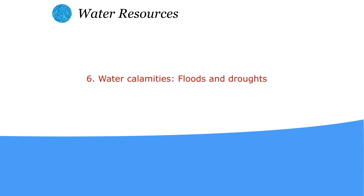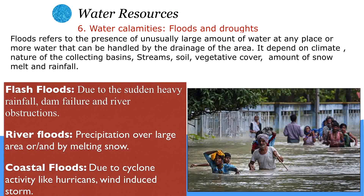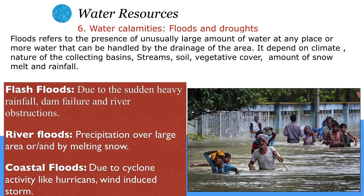Water calamities include floods and droughts. A flood is the accumulation of a large amount of water at one place that cannot be handled by the drainage system of that particular area. It depends on the climate, nature of the collecting basin, streams, soils, vegetation cover, amount of snow, and rainfall. Floods can be divided into three types: flash floods, river floods, and coastal floods.